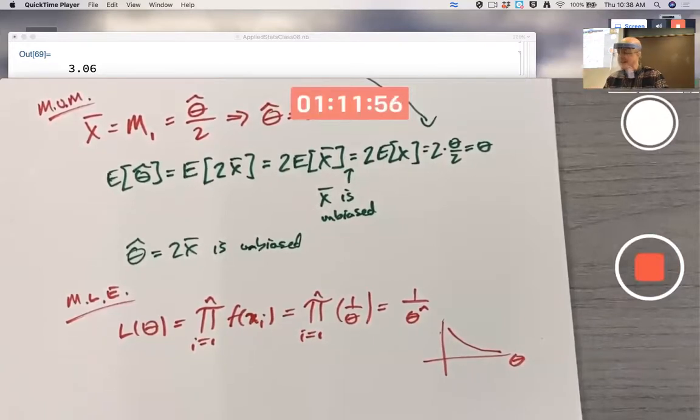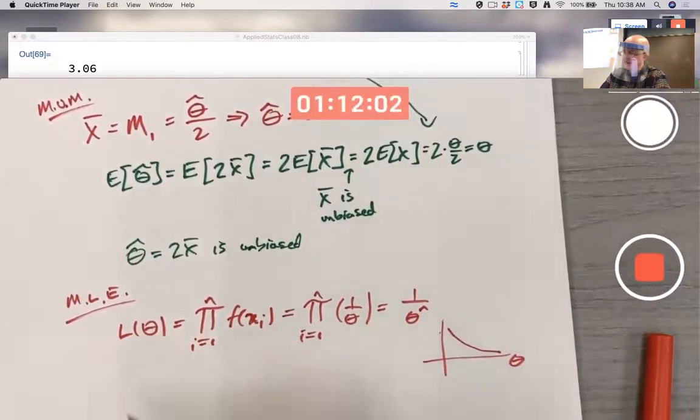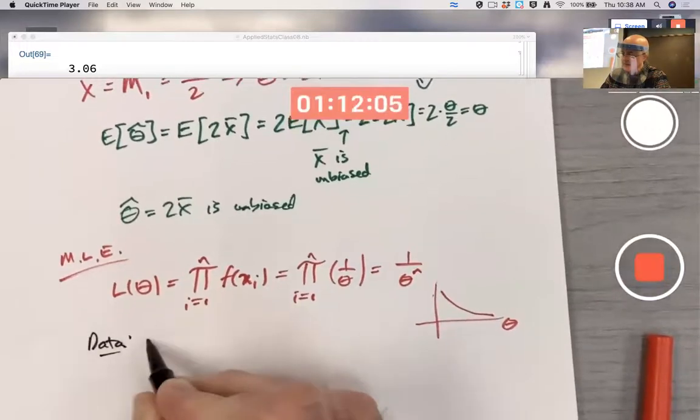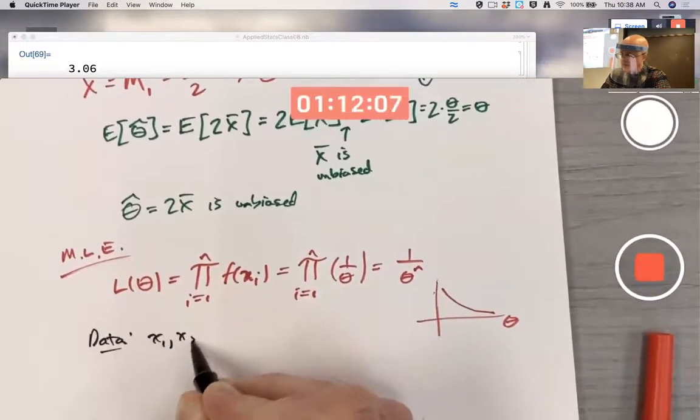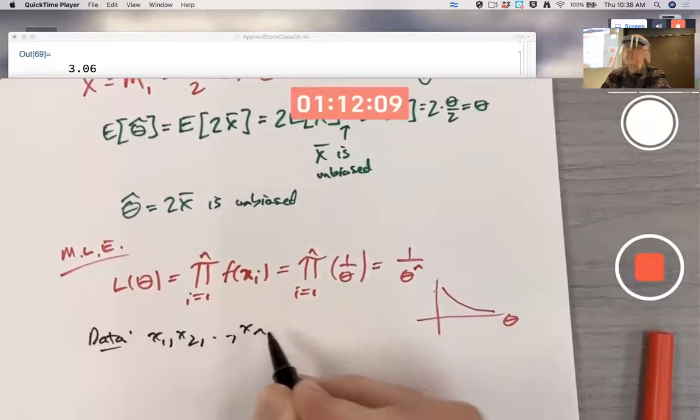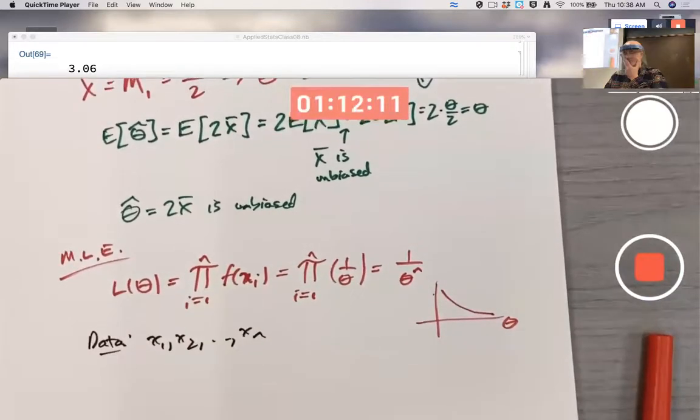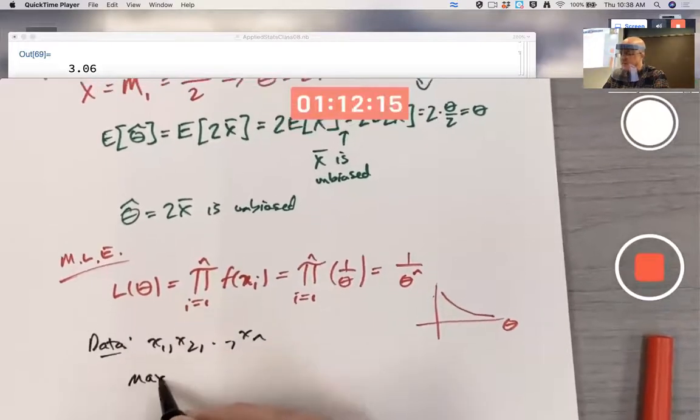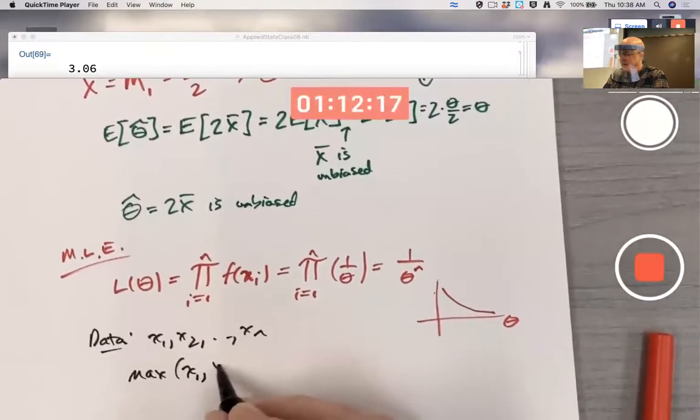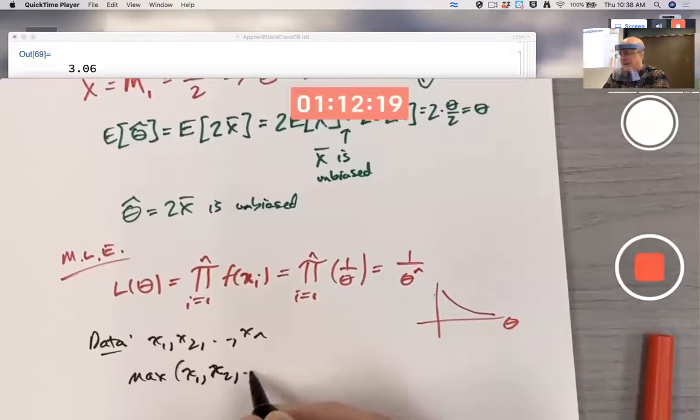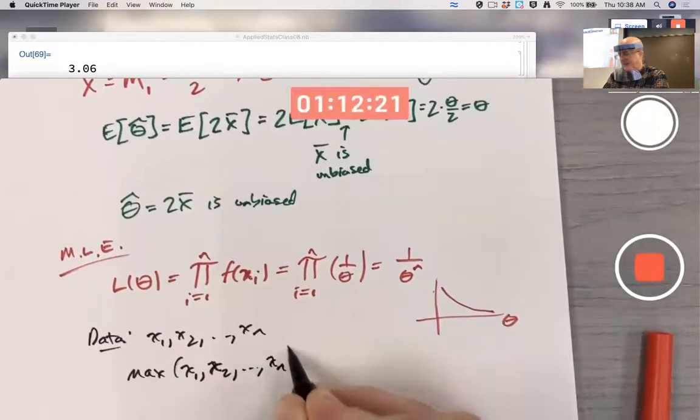For the given data set, data X1 comma X2, et cetera, the maximum of those numbers has to be less than or equal to theta.